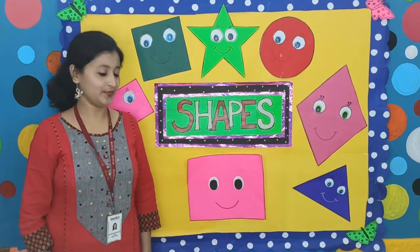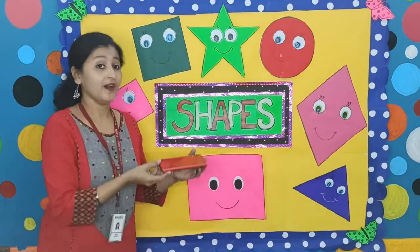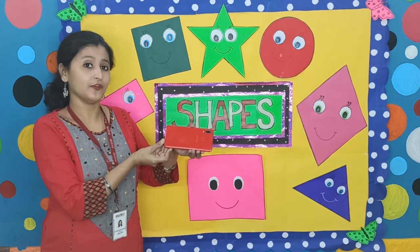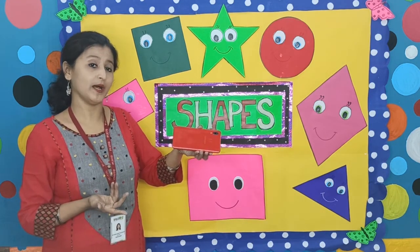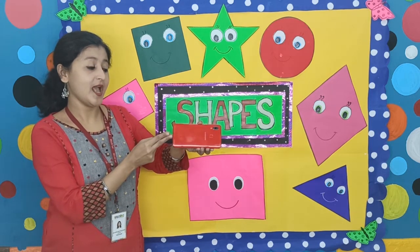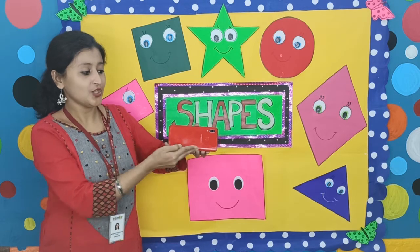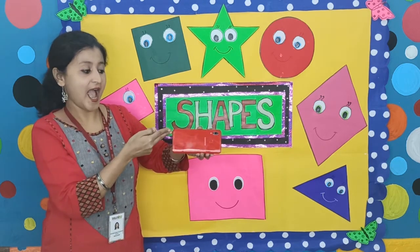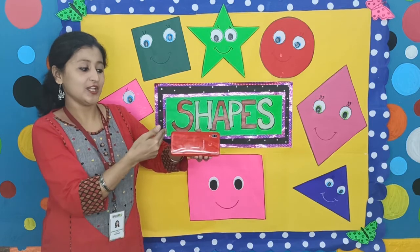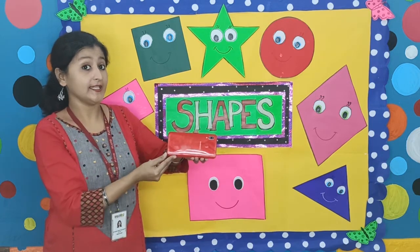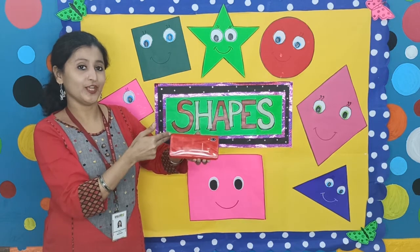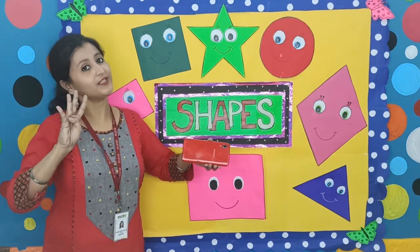And we have another example, and that is a mobile phone. Papa uses a mobile phone, mama also uses a mobile phone. Look at the shape — this is rectangular in shape. Let us see the sides: two big sides and two small sides. And let us count the corners: one, two, three, four. Four corners.